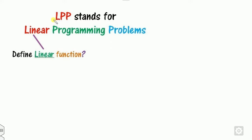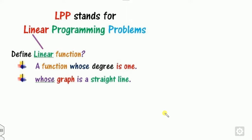Now my task is to explain what LPP is — the linear programming problem. The main question is: what is a linear function? A function whose degree is 1, or a function whose graph is a straight line, is called a linear function.